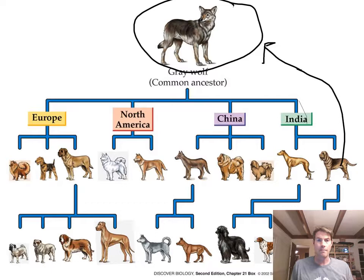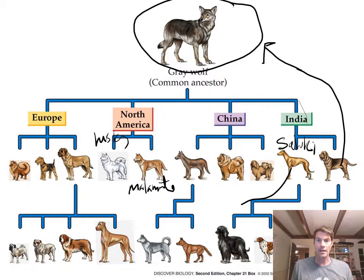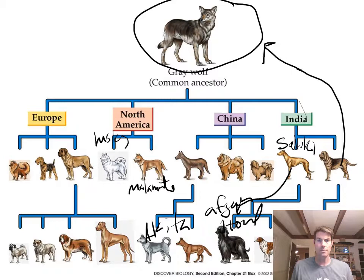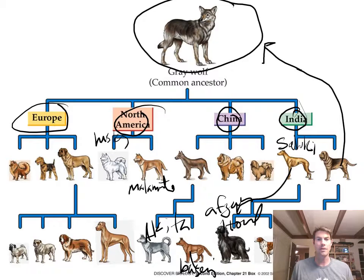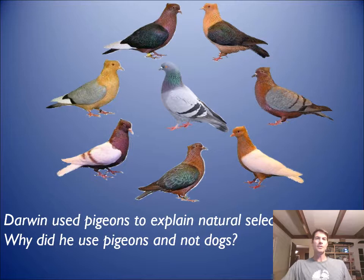Some of these you might remember. This is the husky right there. This is the malamute. This is the India saluki. And this is the Afghan hound. Akita — I know that one. And this right here is the Basenji. We can see there are these different land races — Europe, North America, China, and India — and they've been bred and developed over time to come up with all these different types of dogs that we all like.